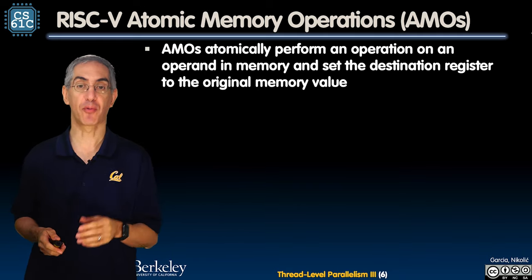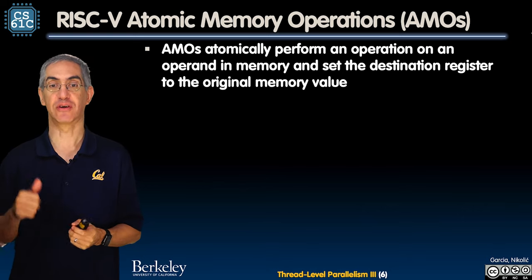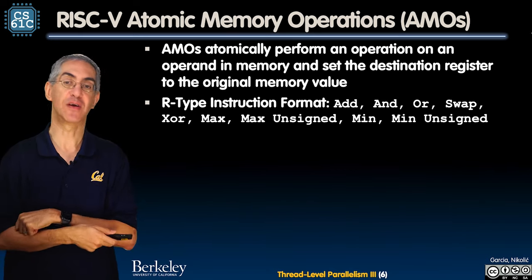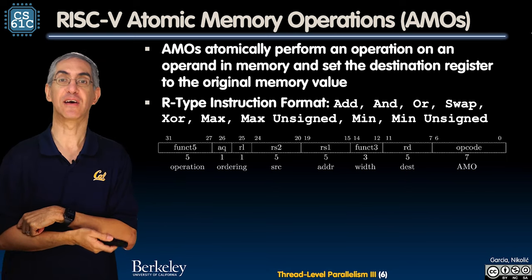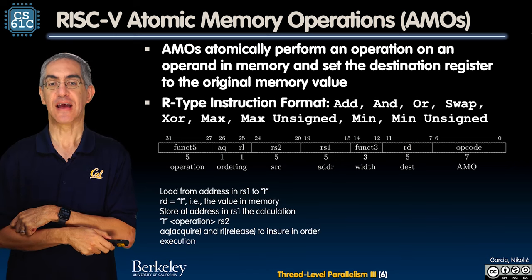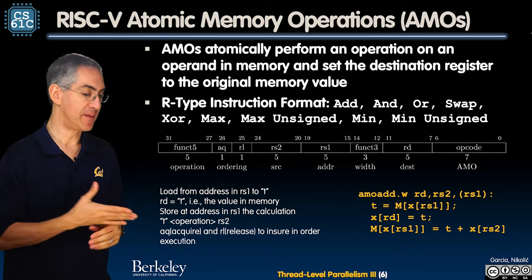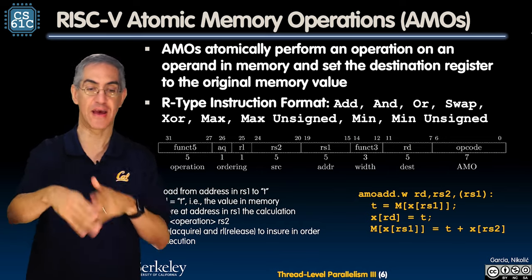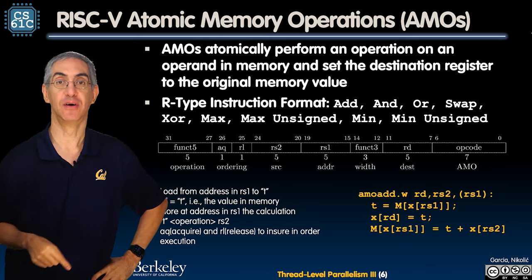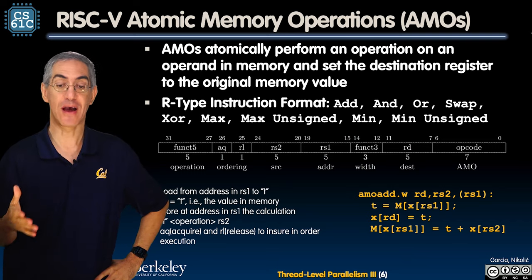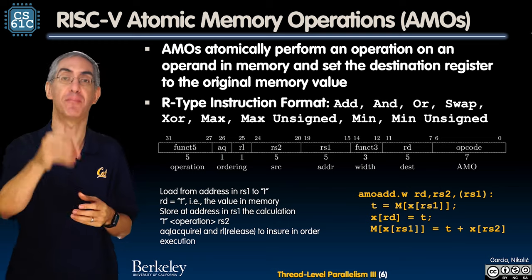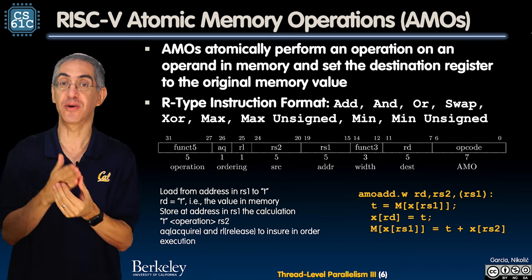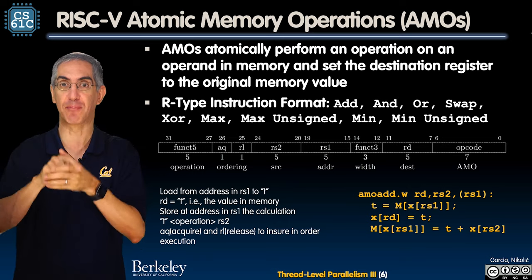An AMO performs an operation on an operand in memory and sets a destination register to the original memory value. If I want to add something to a memory location, I can't do it directly — there's no single operation to add 10 to a value in memory. Normally I bring the value into a register, add to it, and put it back — a three-step process. Atomic memory operations provide hardware support to do all three of those steps at once, in an uninterruptible way.